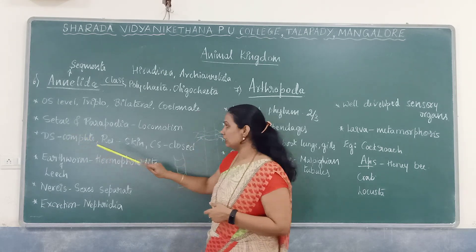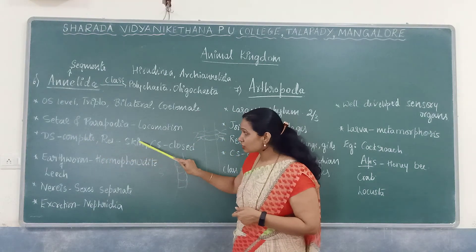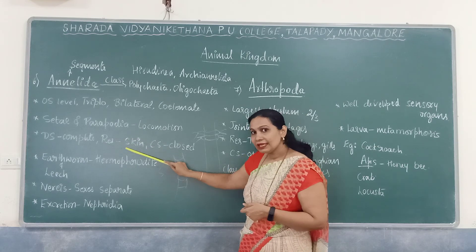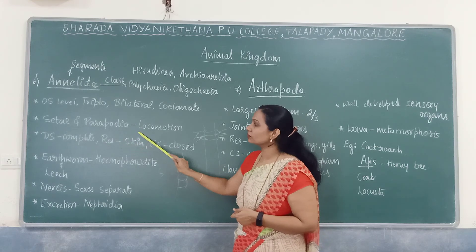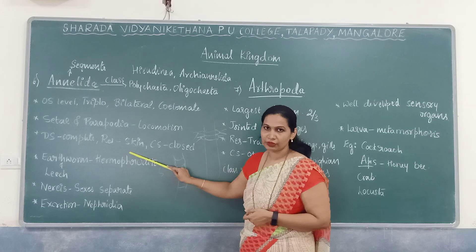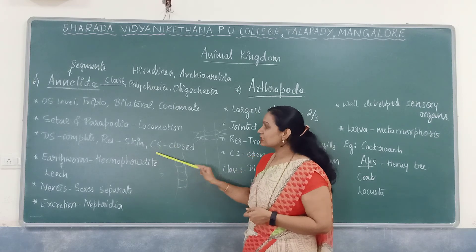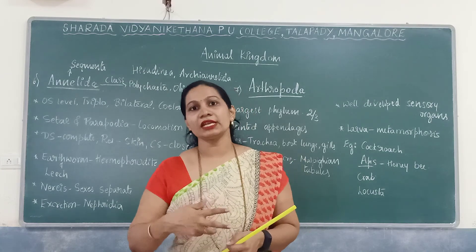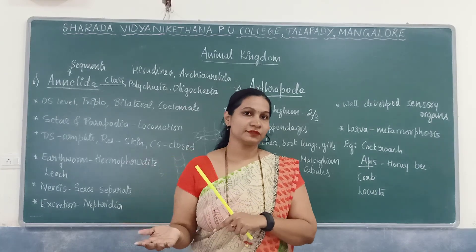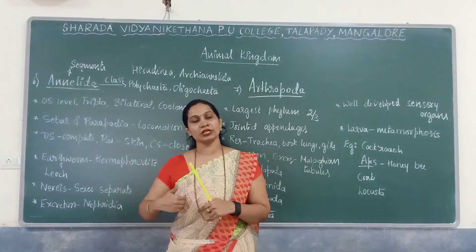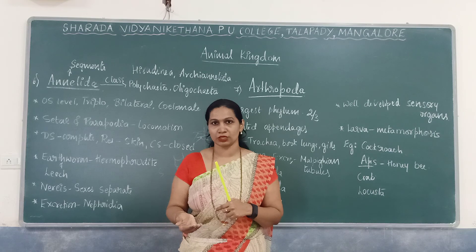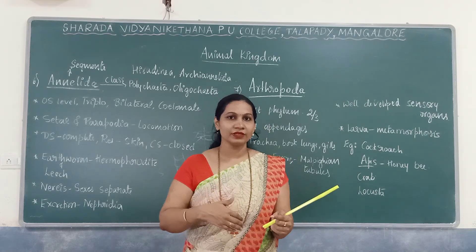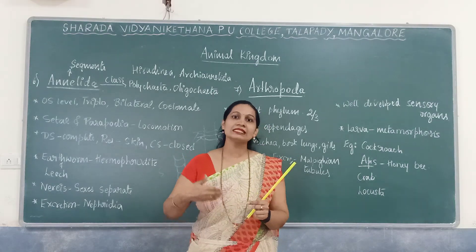Their digestive system is complete, consisting of two openings. Respiration takes place through the skin — they mainly have moist skin. The circulatory system is closed, meaning there is a presence of arteries, veins, and capillaries.